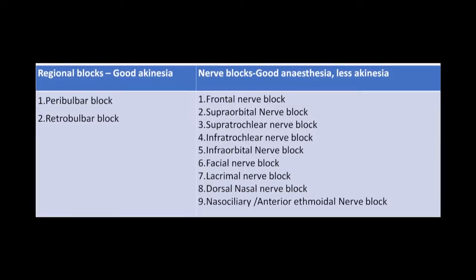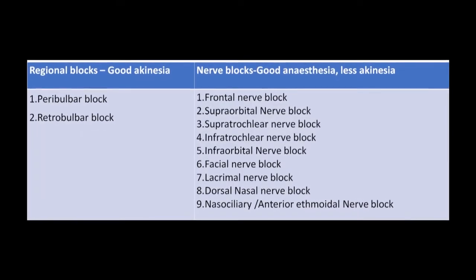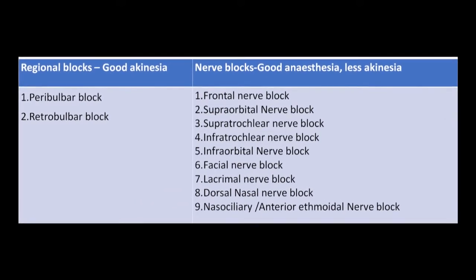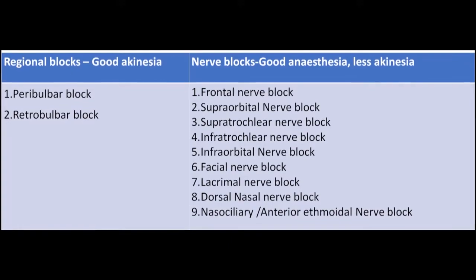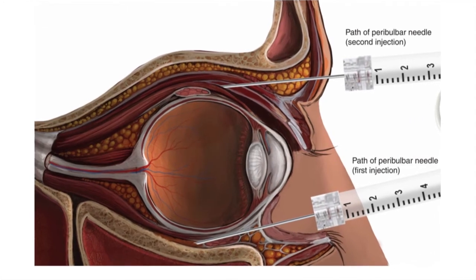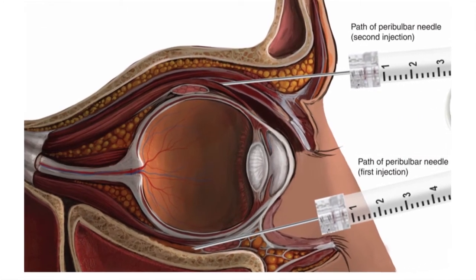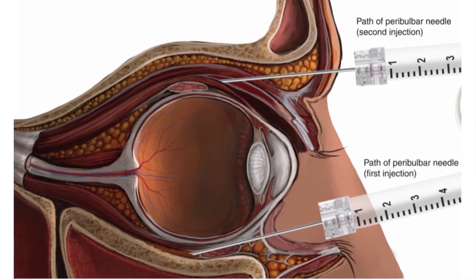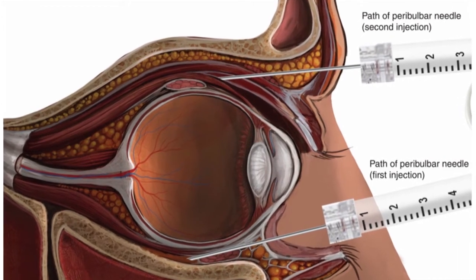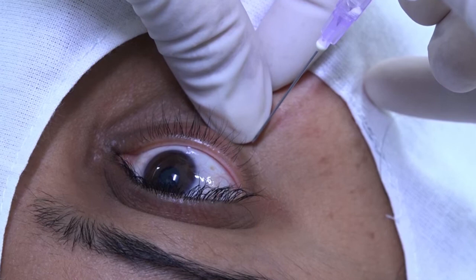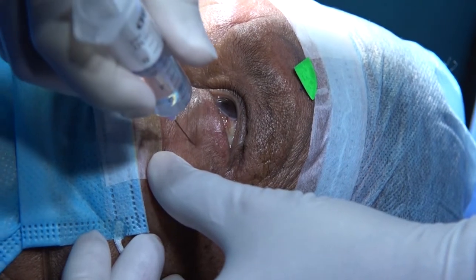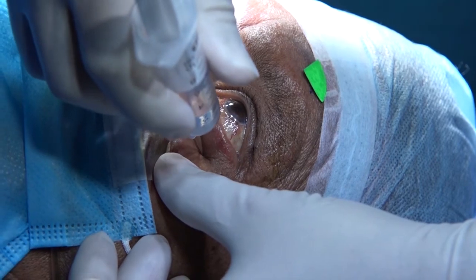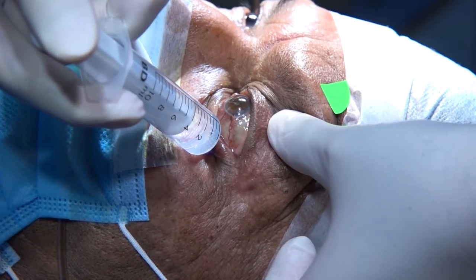The different types of blocks can be divided into orbital blocks and arc blocks. For the peribulbar block, the needle is introduced into the extra-conal space. The classical technique involves two injections: the first injection is inferior and temporal, given at the junction of the outer one-third and inner two-thirds of the lower orbital rim. The second injection is superior and nasal, between the medial one-third and lateral two-thirds of the orbital roof edge.